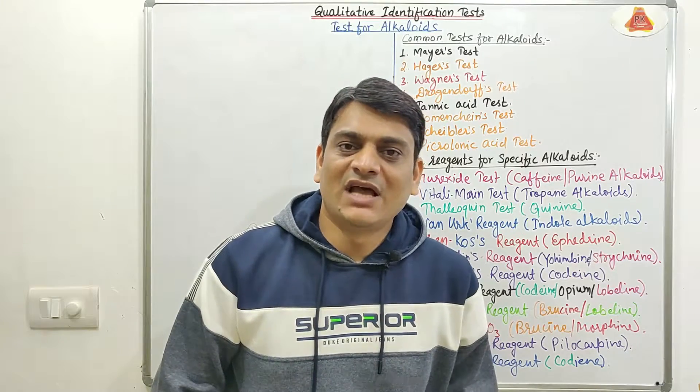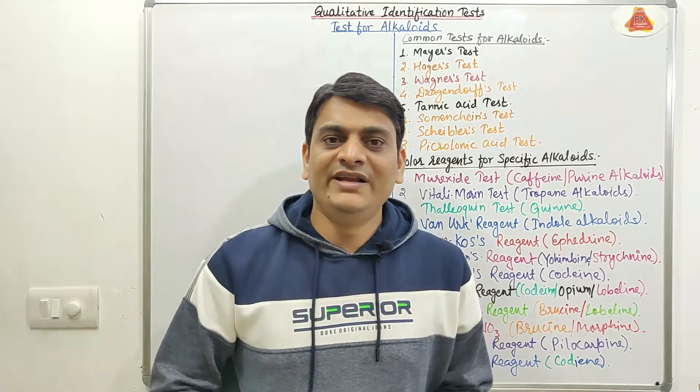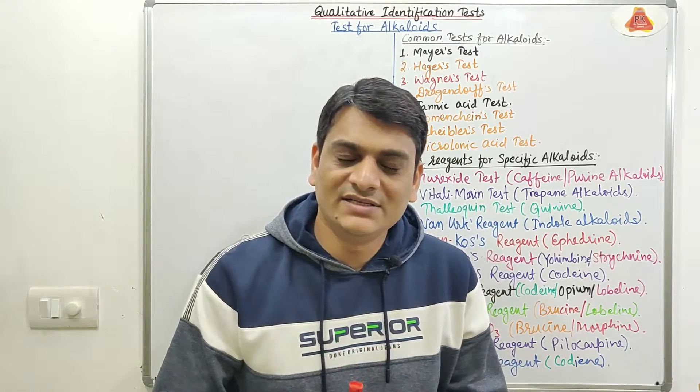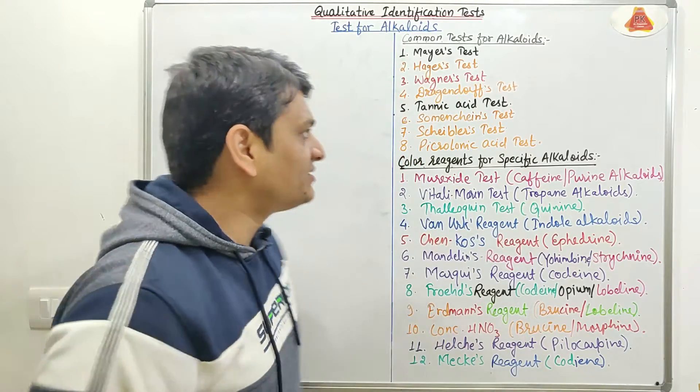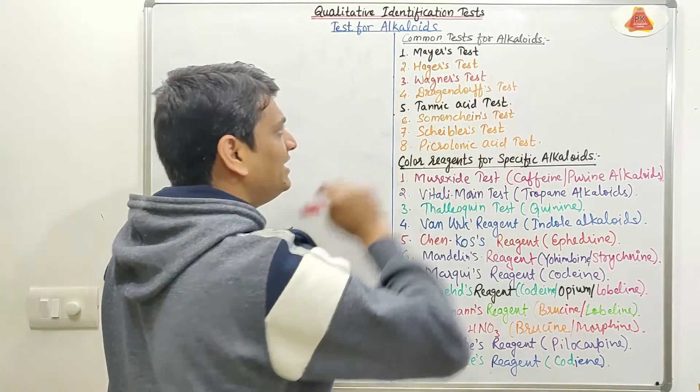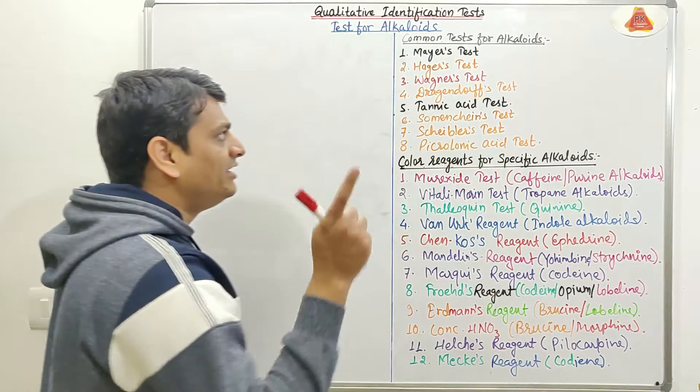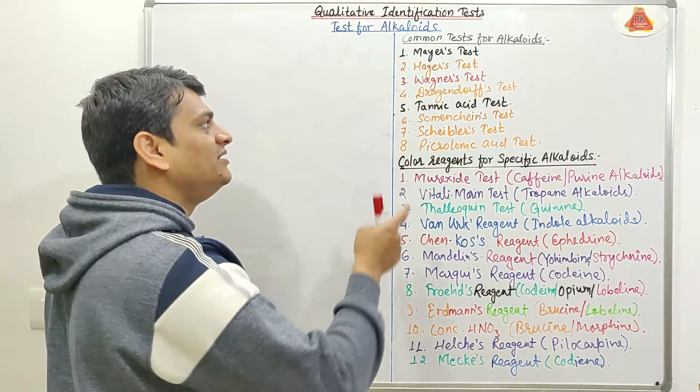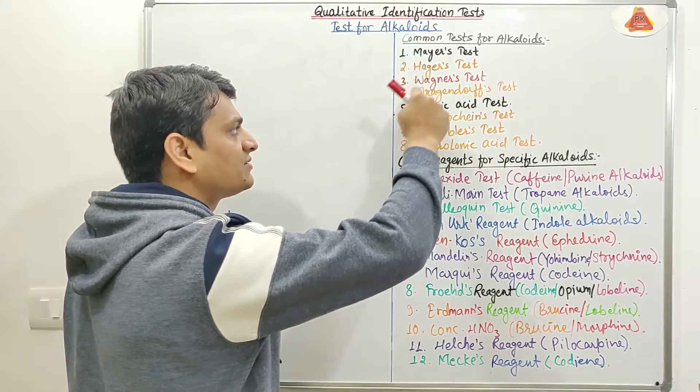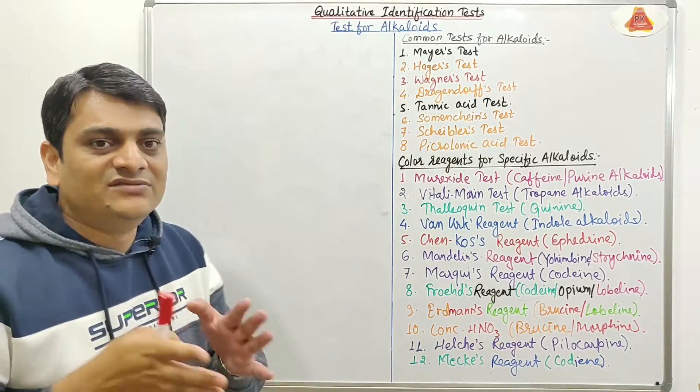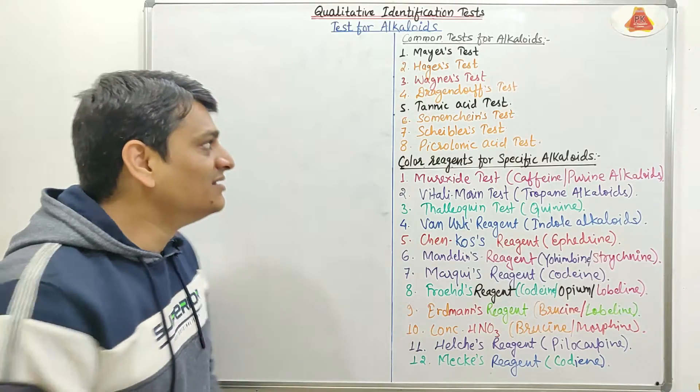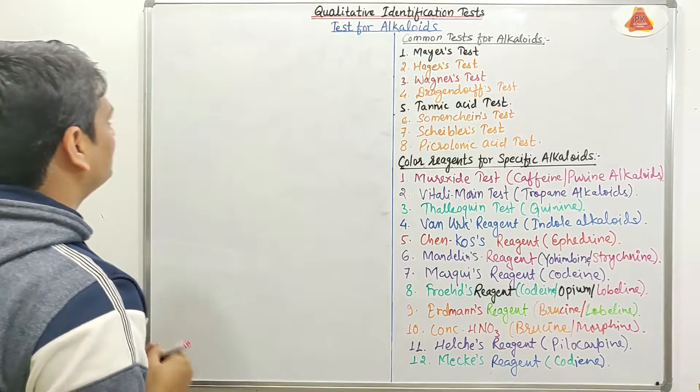Hello friends, in this video series I am going to explain about various qualitative identification tests for alkaloids. These are some common identification tests for alkaloids and these are some specific tests. In my previous videos I have already discussed the details about Mayer's test and Hager's test. Now in this video I will discuss the details about Wagner's test.